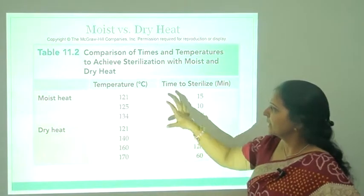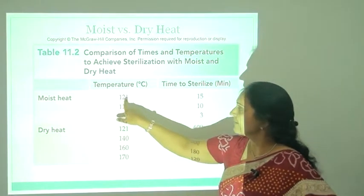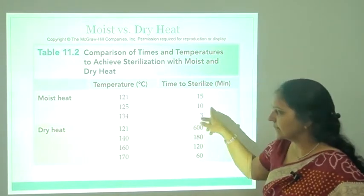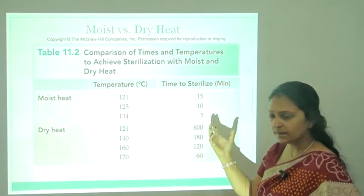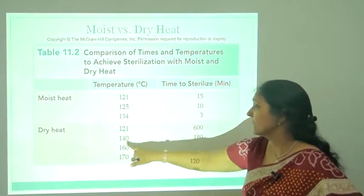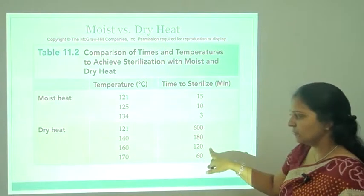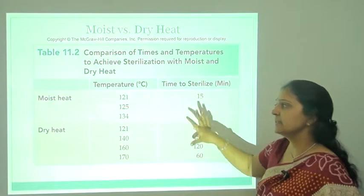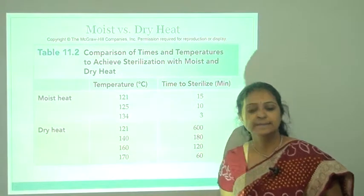Comparing moist heat and dry heat: moist heat requires 121°C for 15 minutes, 125°C for 10 minutes, and 134°C for only 3 minutes for sterilization. Dry heat requires 121°C for 600 minutes, 140°C for 180 minutes, 160°C for 120 minutes, and 170°C for 60 minutes. From this comparison we can observe that moist heat is more effective than dry heat.